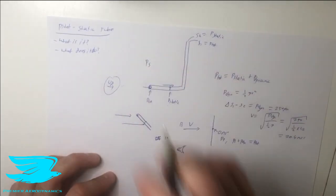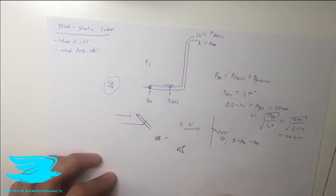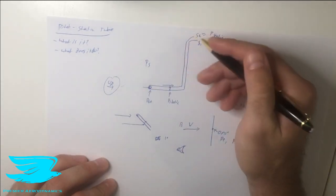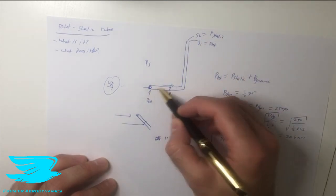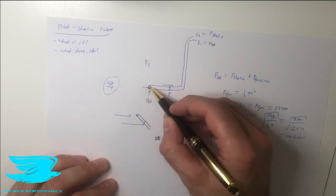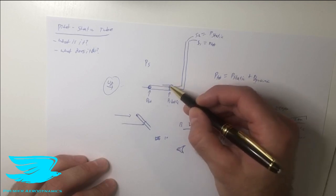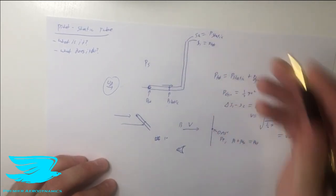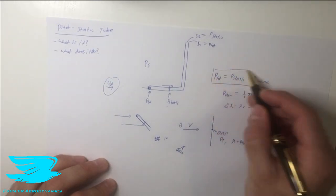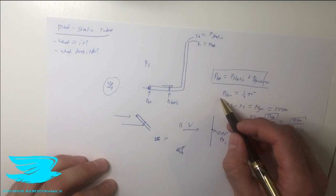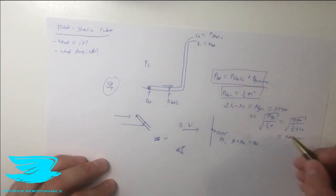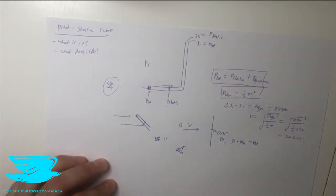So to recap: the pitot-static tube is a simple but incredibly important and powerful instrument — every engineer needs one. It has a front hole measuring total pressure, because flow is rammed straight into it, and side holes measuring static pressure, because flow travels parallel to the tube. Using the equation total pressure equals static pressure plus dynamic pressure, we find the dynamic pressure from the difference between the two sensor readings. Knowing the air density, we rearrange to find the velocity of flow in the wind tunnel.